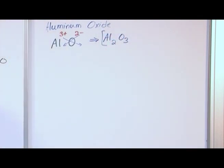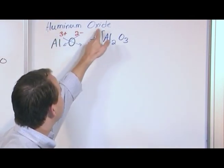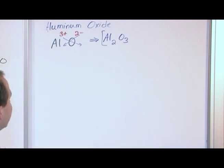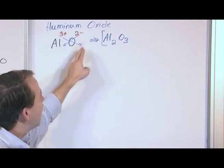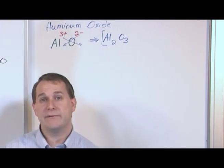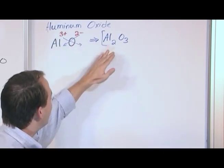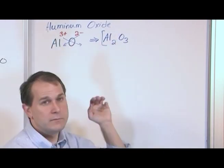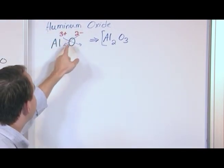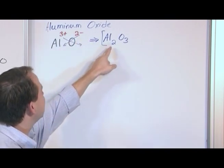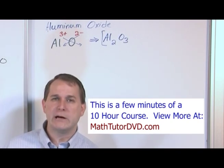This is a great example of why we don't say dialuminum trioxide like we do for molecular formulas. Aluminum is always going to have a +3 charge, and oxygen always has a -2 charge. Because of that, when you put aluminum with oxygen, you're always going to get Al2O3. Because you know from the name what charges will result and what formula you'll get,